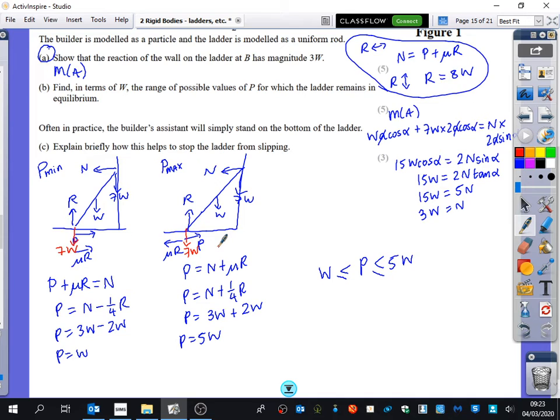Now there's three marks here. So you pretty much need to be saying three different things. So for part C of the question, if we added someone else on here, we need to start thinking about what things might change.